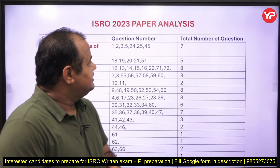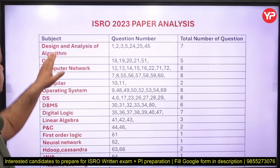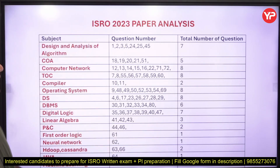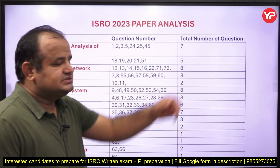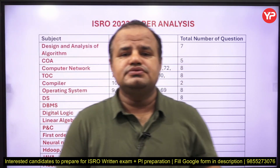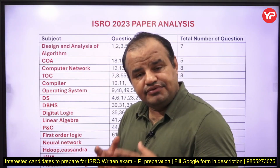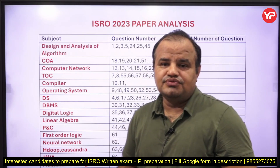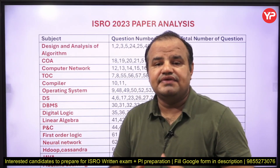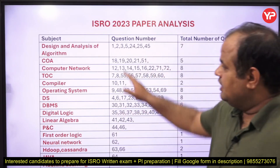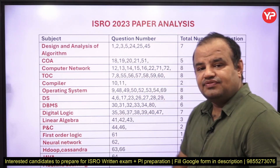In Design and Analysis of Algorithms, they asked seven questions, and all the questions are very easy — if you know the concept, it will take hardly 30 seconds to solve that problem. COA is again one of the important subjects.